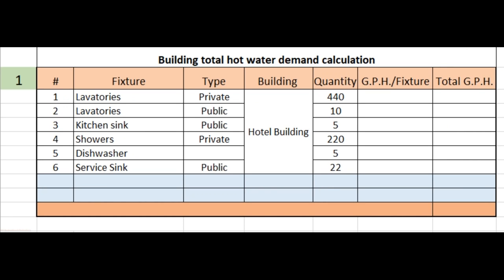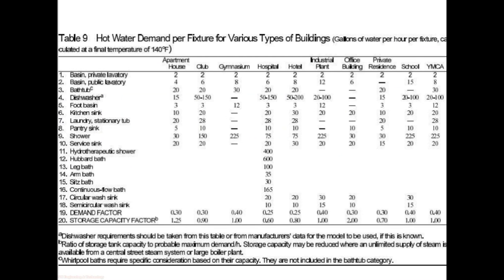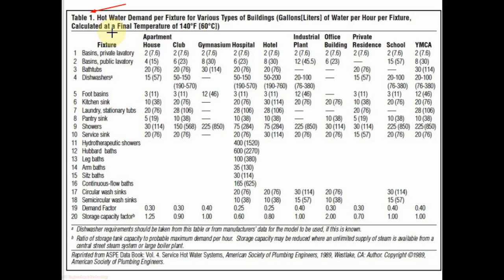For the calculation of hot water demand, let us make an Excel table showing fixture name, their type, building type, and fixture total quantities. For hot water demand per fixture for various types of buildings, there are two tables: one from ASHRAE Table 9, and Table 1 from the American Society of Plumbing Engineers, to find the hot water demand per hour per fixture for all types of buildings.